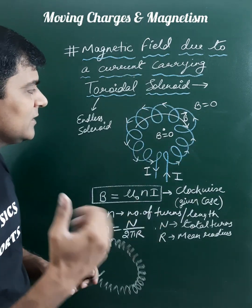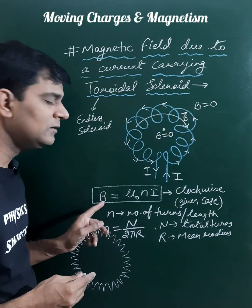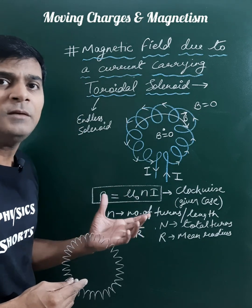So the expression of magnetic field inside the solenoid will be mu naught n I in magnitude.